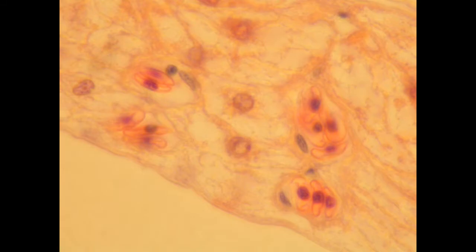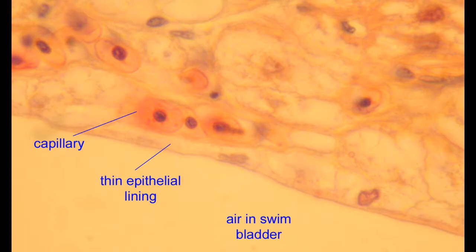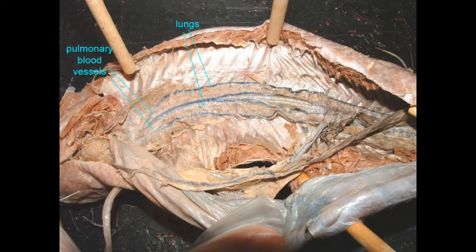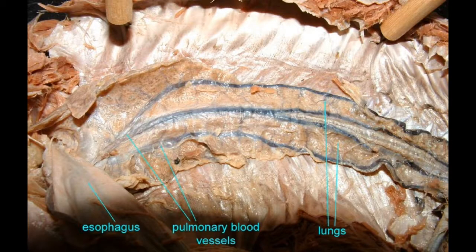In lungs, we see the same arrangement. Across this thin barrier, gas exchange occurs as oxygen from the lumen — in the case of lungs and air sac, here the swim bladder — can then pass to blood. In sarcopterygian fish, this single swim bladder used for respiration would be divided into a pair of structures known as lungs, as in the lungfish depicted here, which would be the ancestors of amphibian lungs.